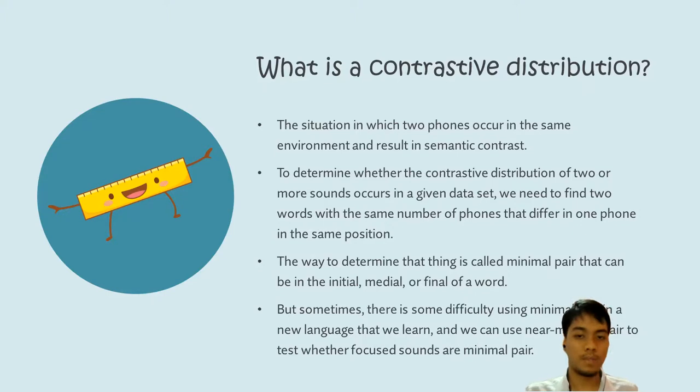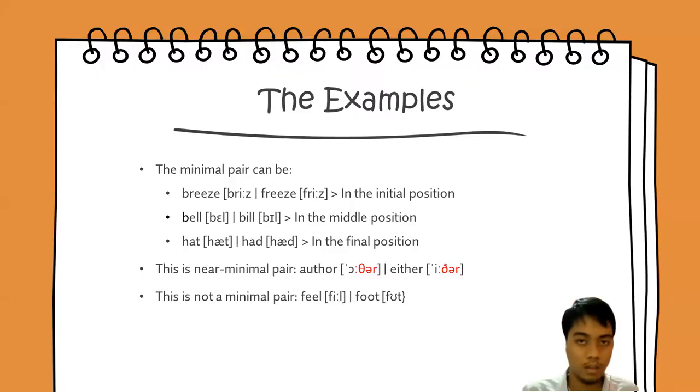But sometimes there is some difficulty using minimal pair in a new language that we learn, and we can use near minimal pair to test whether focused sounds are minimal pair. The examples of minimal pairs can be breeze with freeze in the initial position, bell with bill in the medial position, head with had in the final position. And also, this is a near minimal pair: other and either.